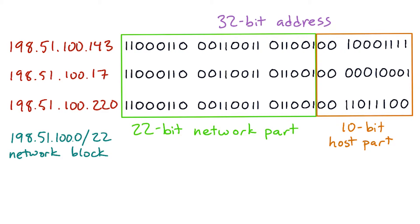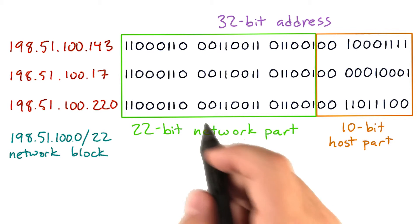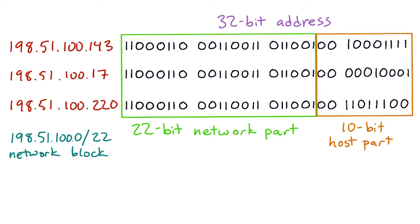But if the network prefix is shorter, say 22 bits, then there would be 10 bits left over for host addressing. This would be a slash 22 network. And you can't tell how long the prefix is just by looking at the addresses. For these addresses, either a 22 or a 24 network would be a possibility.